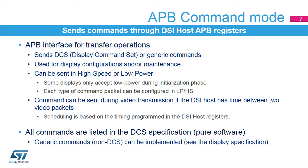APB command mode is used to send commands through the DSI Host APB register interface. Generic or Display Command Set (DCS) commands can be sent for display configuration at startup or for maintenance operations when the application is running. All commands can be sent in either high-speed or low-power mode, as some displays only accept low-power communication at startup. Commands can also be sent during video streaming; the DSI Host scheduler automatically evaluates if there is sufficient time to insert a command during video transmission. All commands are fully programmable by software, meaning the DSI Host supports all standard DCS commands and all display-specific custom commands.